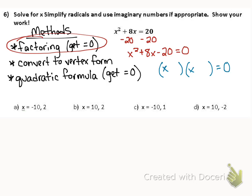If I'm going to multiply to a negative but add to a positive, the only way to make that happen is to use one positive number and one negative number. The two numbers that would multiply to 20 and add to 8 would be positive 10 and negative 2.